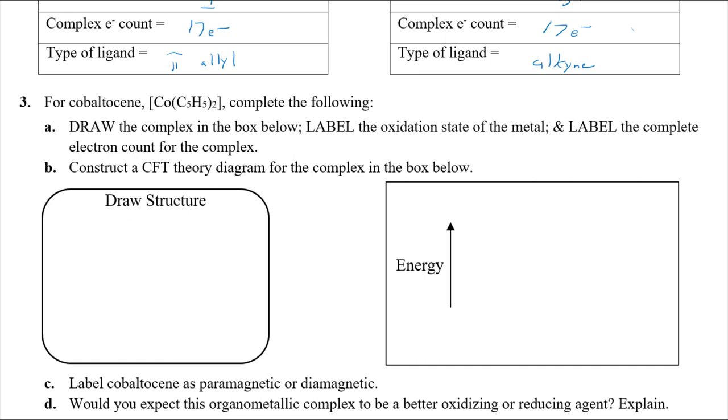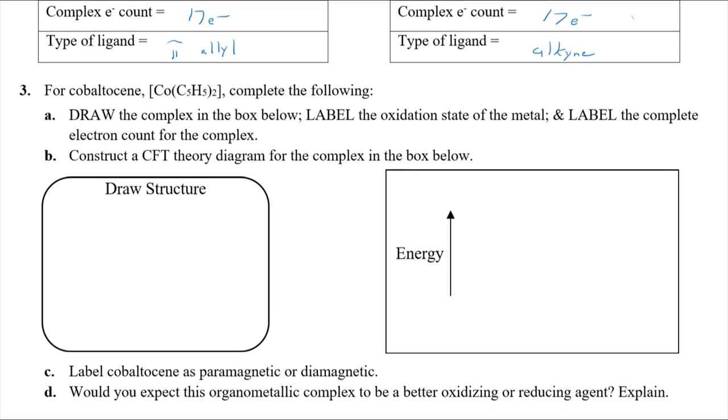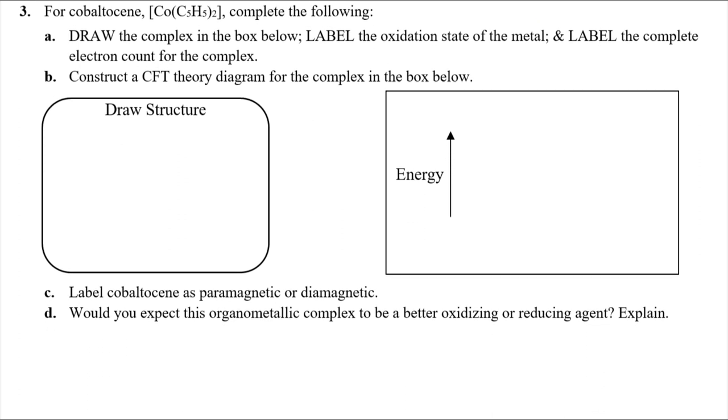All right. This is pretty quick. We're almost done with this homework assignment. Let's power on through one more, and we can call it a day. So this is a really neat complex. Cobaltocene is a type of metallocene dealing with the CP ligand, the cyclopentadienyl anion.